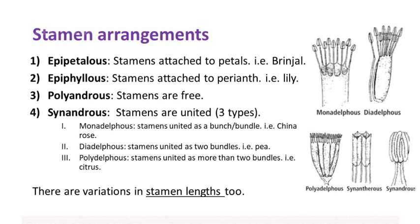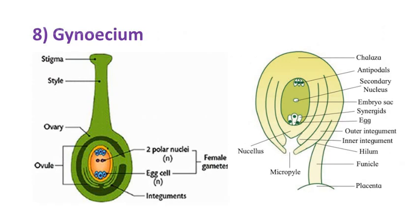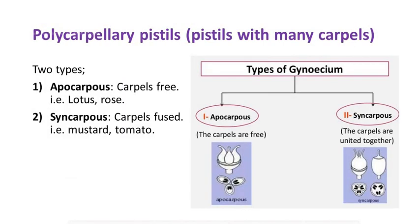There are variations in stamen lengths too. Now let's move on to the female part, or the gynoecium. You can see the structure of the carpel that includes the ovary, stigma and style, and the cross-section of the ovary showing different tissue arrangements. Flowers that have more than one carpel are termed polycarpellary. These can be seen as two types: apocarpous flowers have free carpels — lotus and rose are good examples — and syncarpous flowers have fused carpels, for example mustard and tomato.